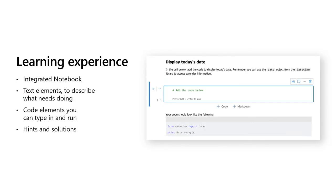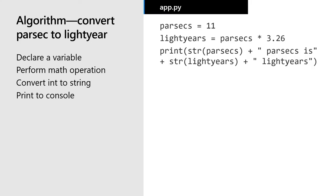Here's what the learning experience looks like: on your right, there's a text element explaining what's about to happen, then a code element where you type code and hit the play button. The underlying engine compiles and runs the code, and if you get stuck, there's a solution shown at the bottom. Here's a simple Python algorithm — it converts parsecs to light years by multiplying parsecs by the constant 3.26, then prints the result using the str() function to convert the number to a string so the data types match.